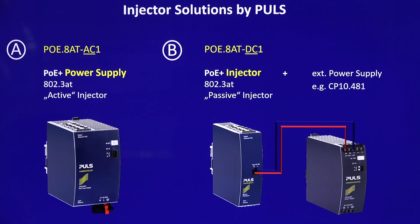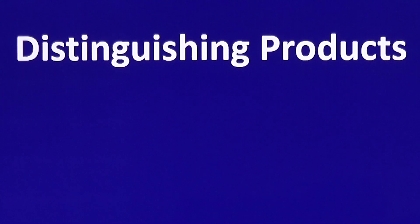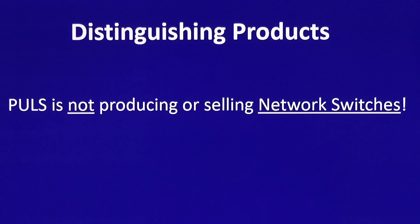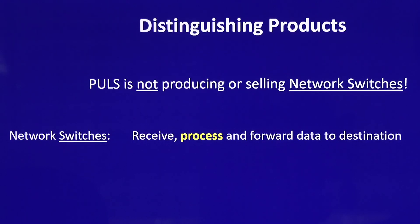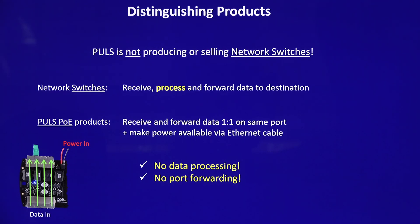These are the main products we have — offering eight channels and one-gigabit compliance. But how do we differentiate from existing products in the market? It is essential to understand that Pulse is not offering a network switch. Network switches have receiving, processing, forwarding, and routing functions built in. Our Pulse PoE products have no such function integrated. It is a very simple, forwarding-only approach, which is essential in high-speed applications for optical inspection or in the security domain, since our devices offer no access to the data. We have no data processing and no port forwarding, yet we are one-gigabit compliant, so there are no restrictions on speed.